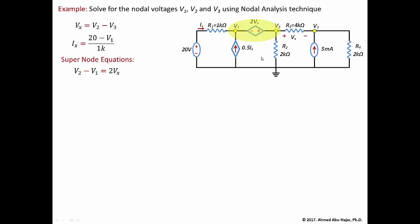That voltage source equals 2 times vx, so v2 minus v1 equals 2vx. We already know vx equals v2 minus v3, so substituting: v2 minus v1 equals 2(v2 minus v3). Rearranging, we get: minus v1 minus v2 plus 2v3 equals zero. This is the first equation of the supernode.